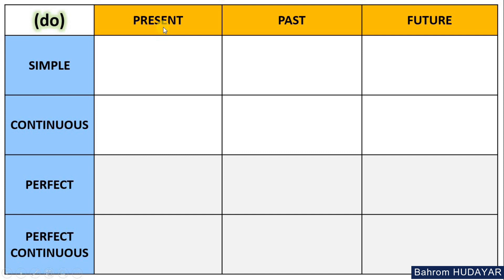Here is the table and on the table we have three main times: Present, Past, and Future. These three columns belong to times. And we have the components: Simple, Continuous, Perfect, and Perfect Continuous. These are the components. These rows in this table belong to components. We have times and columns, and components and rows.